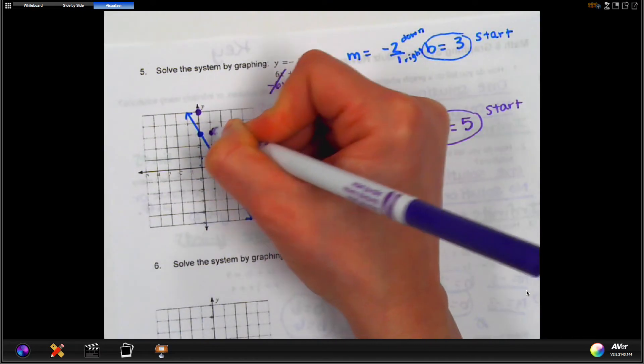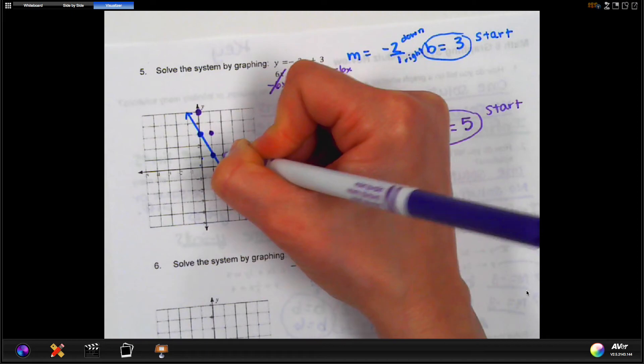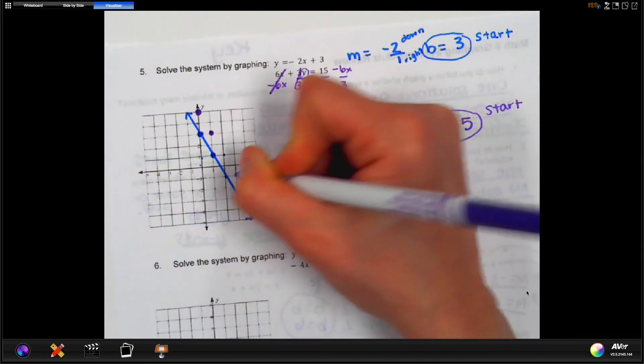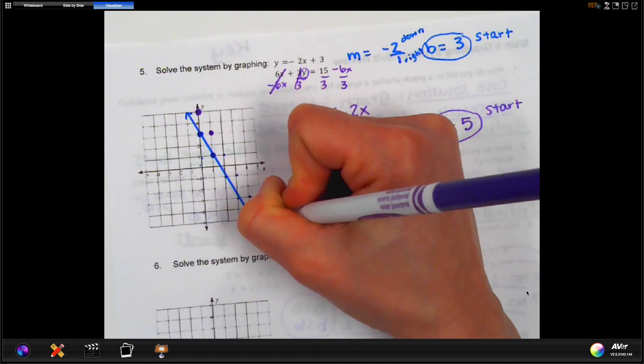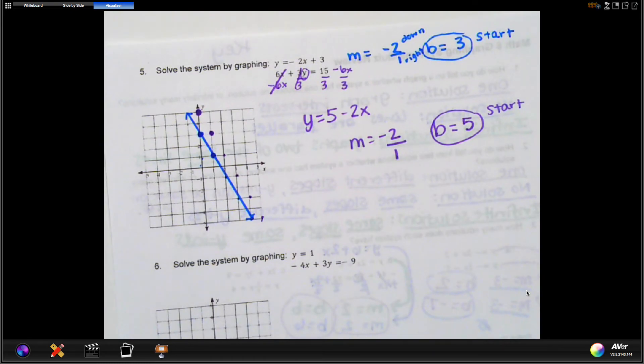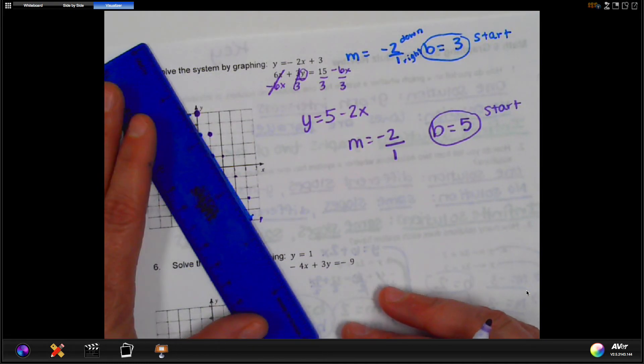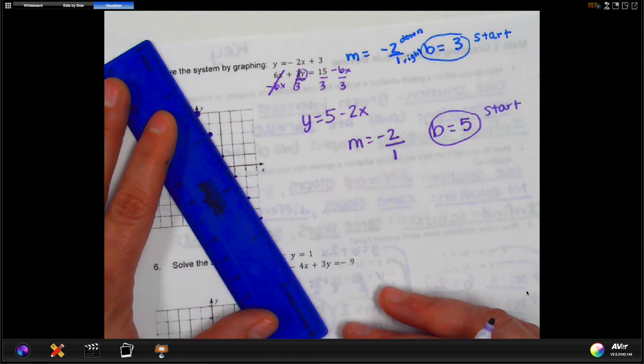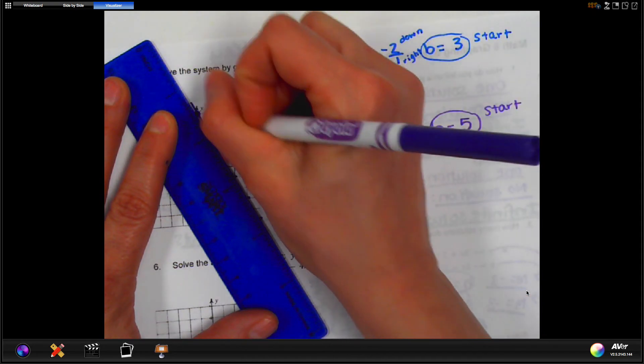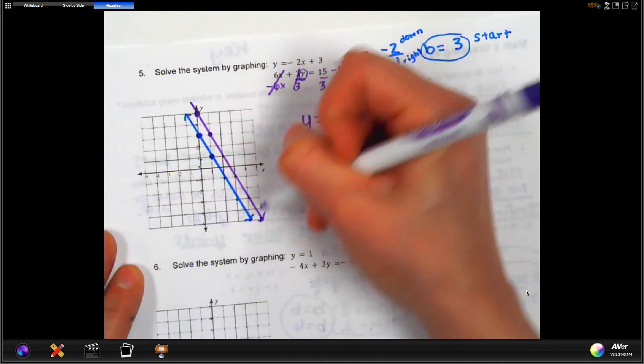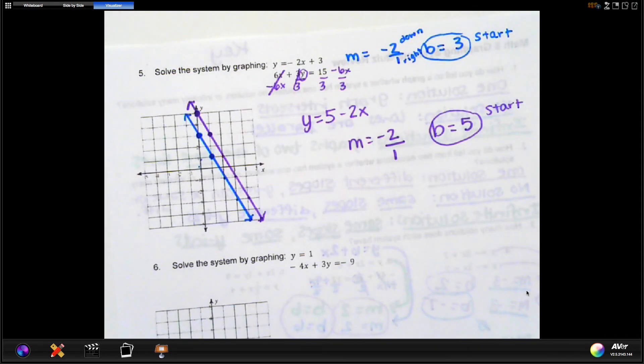And again, if you follow that pattern, down 2, right 1, down 2, right 1, all the way down, it will make your graph much more accurate. Take your ruler and go through all of your dots. Make your line. Okay, so there is the system.